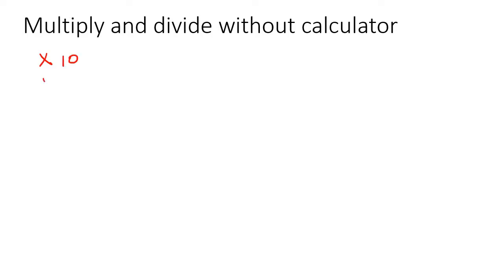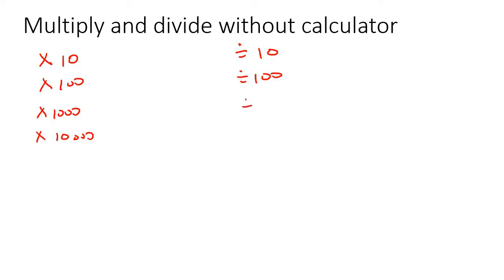We're going to be doing calculations like multiplying by 10, multiplying by 100, multiplying by 1000 — it could go on and on. We're also going to look at what happens when you divide by 10, dividing by 100, dividing by 1000, and dividing by 10,000.